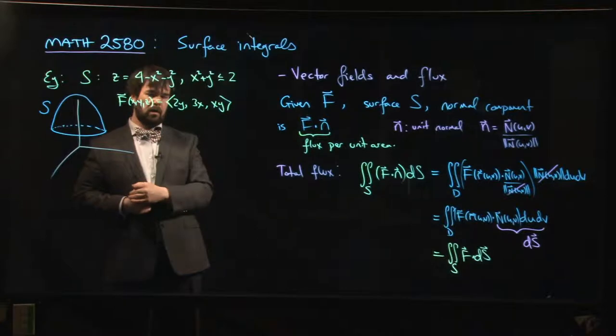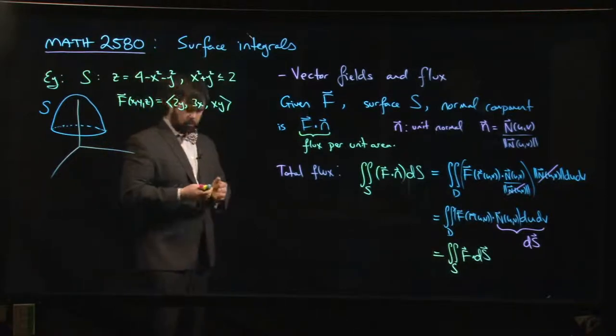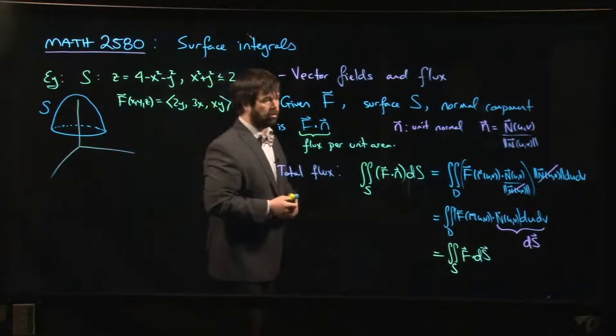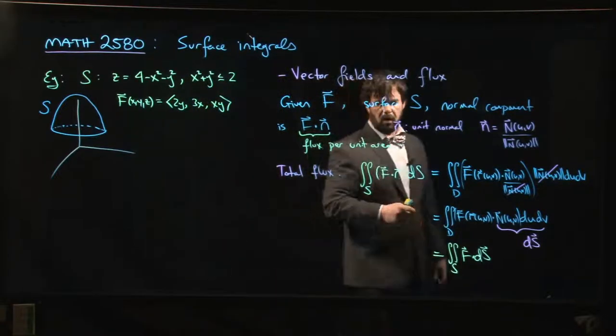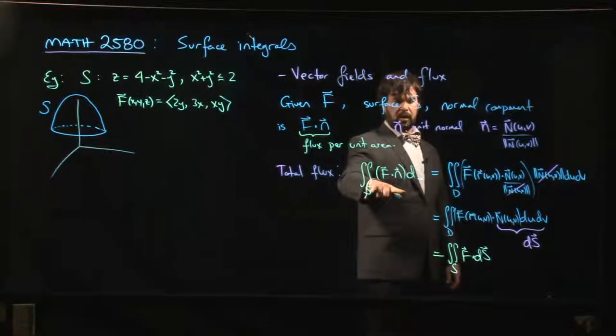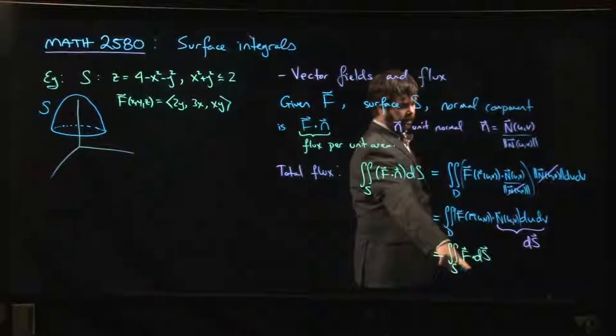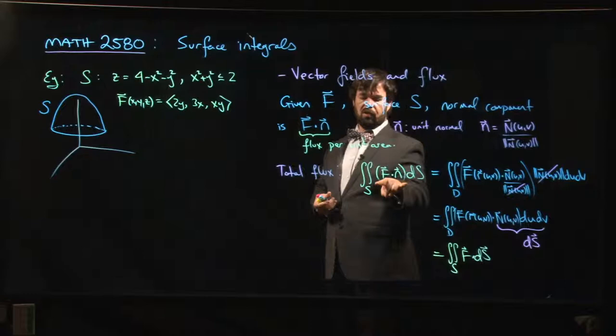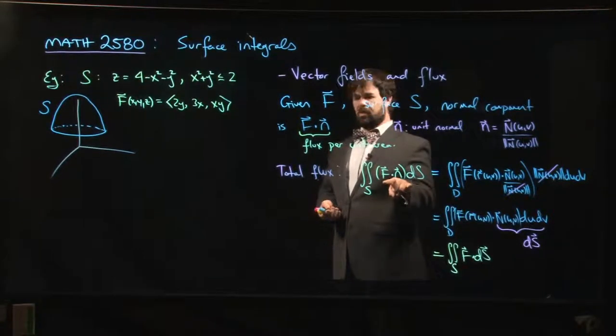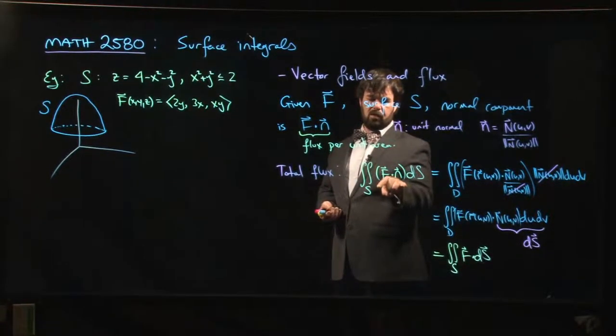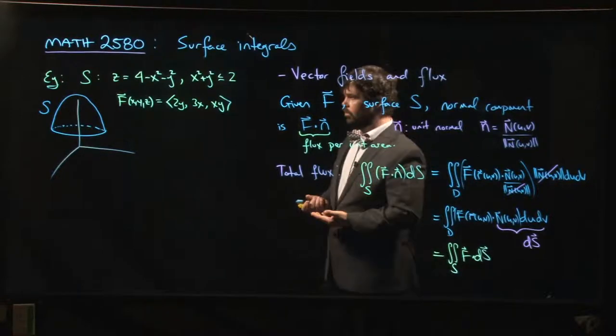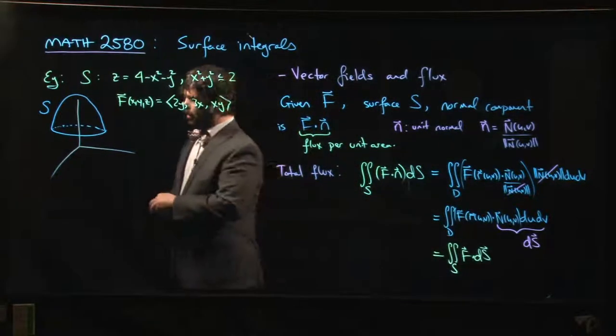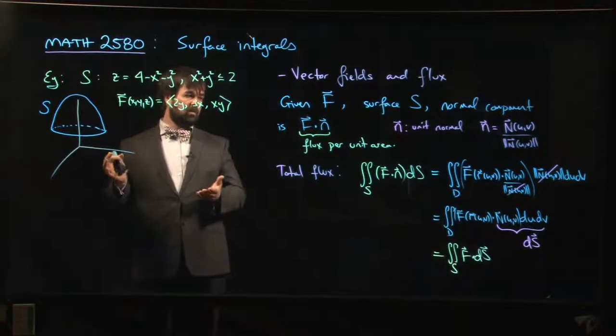Here's our vector field. Now the first thing you've got to do is decide how to parameterize the surface, because you're unlikely to use this formula here, you're more likely to use this formula down here. There are one or two cases where you might choose to use this formula.